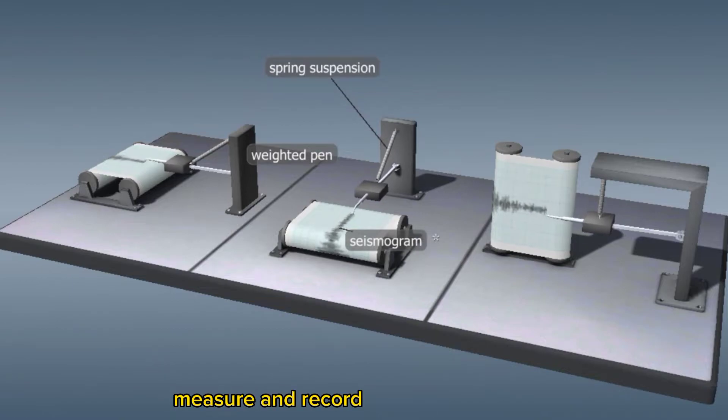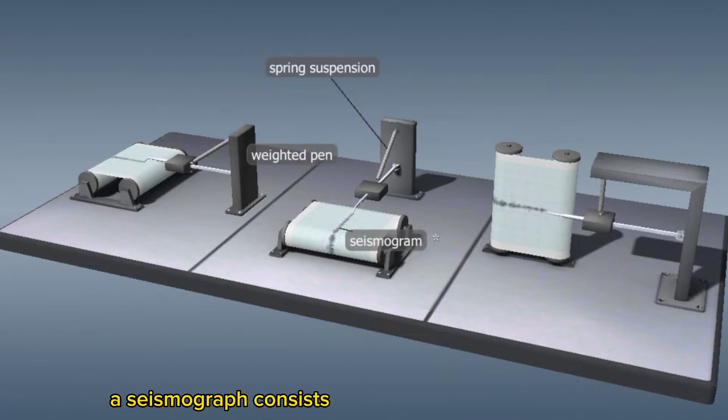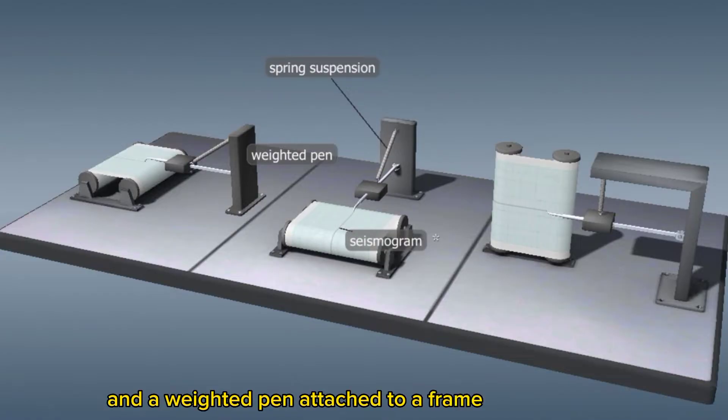measure and record the ground motion caused by seismic waves during an earthquake. A seismograph consists of a base fixed to the ground, a paper roll rotating on a cylinder attached to the base, and a weighted pen attached to a frame with a spring.